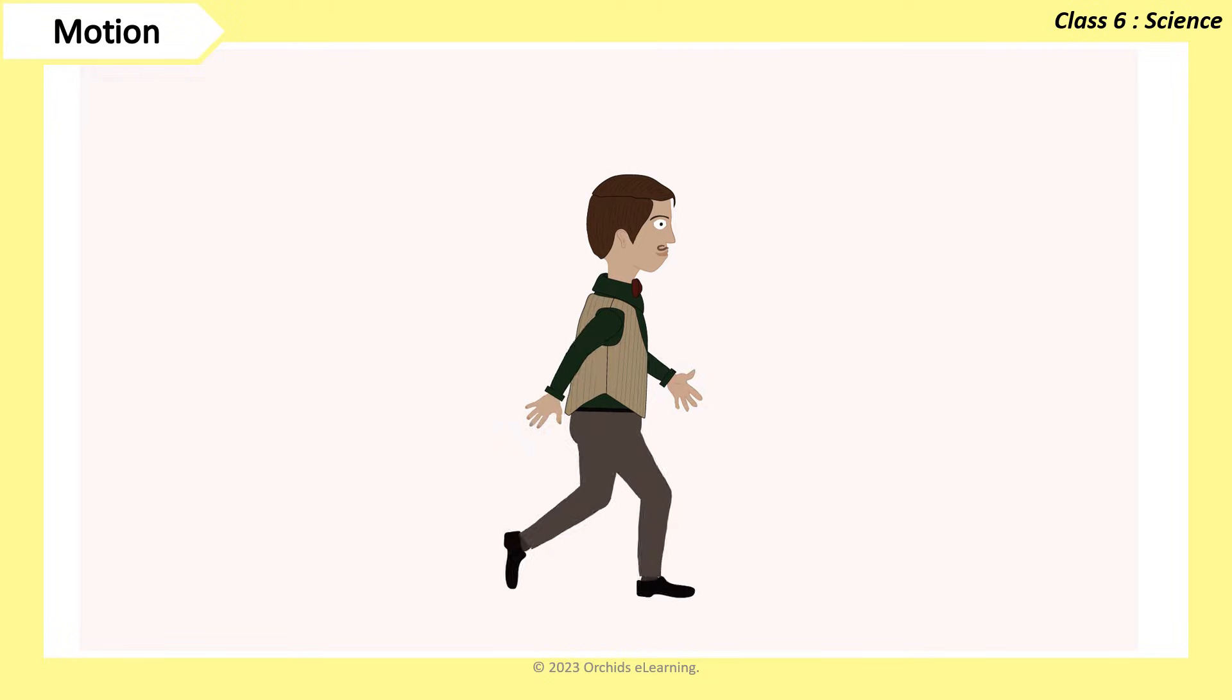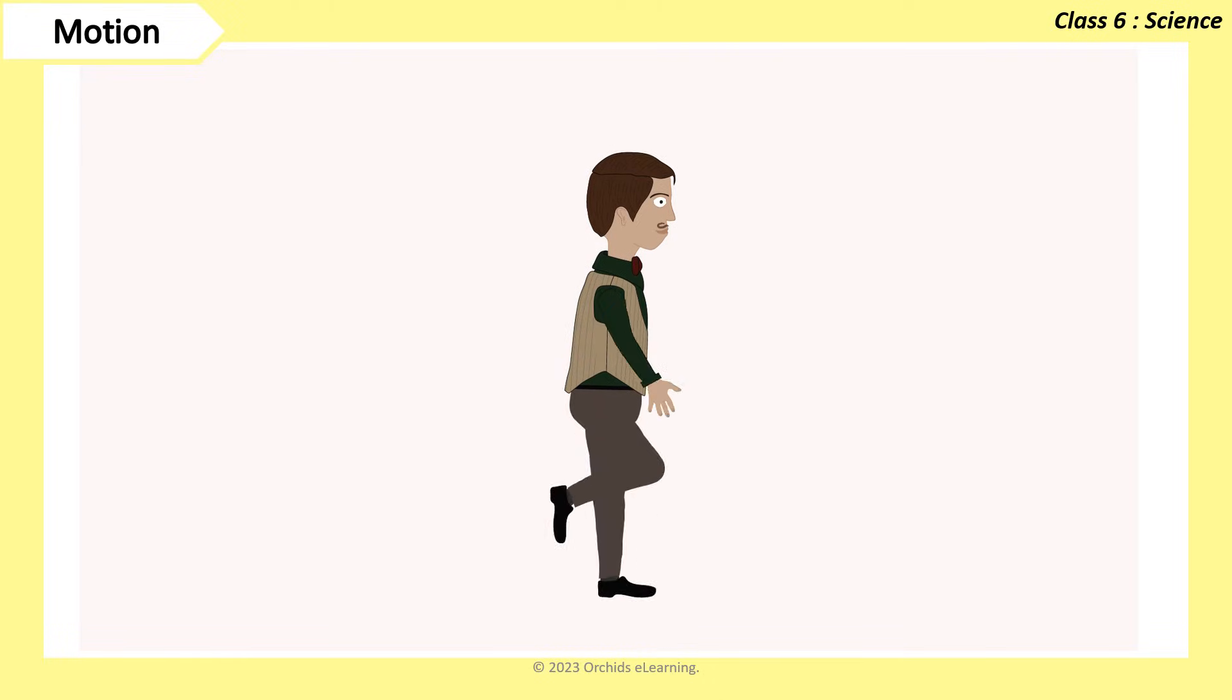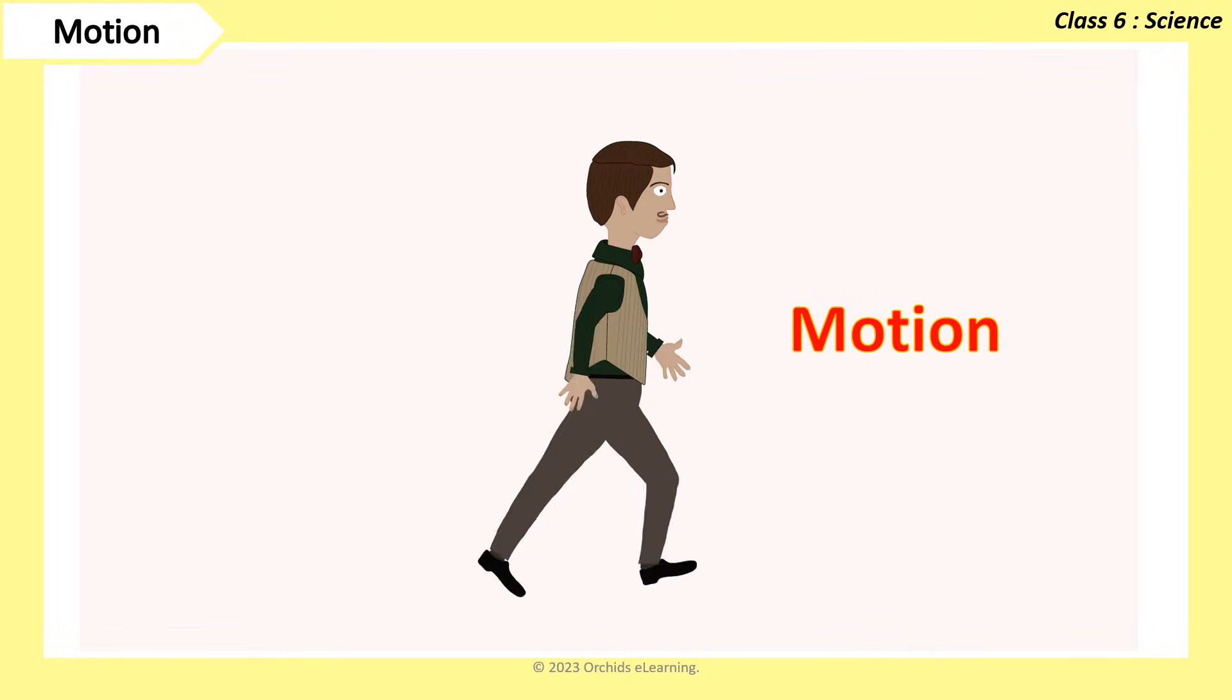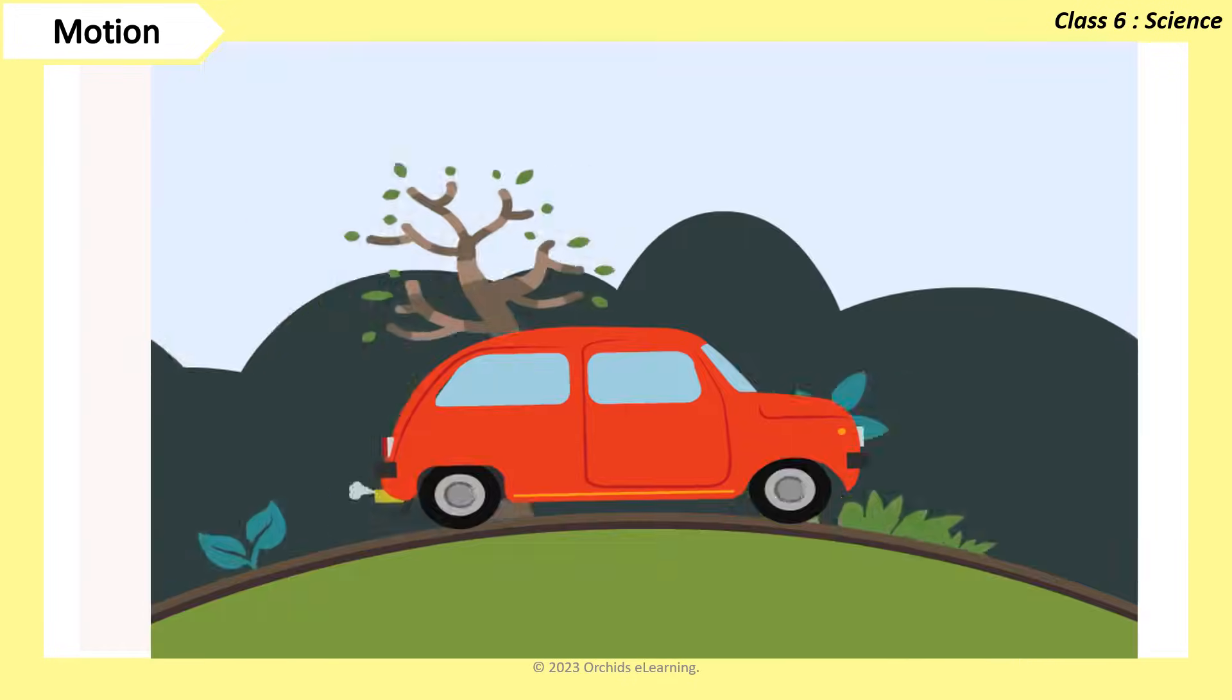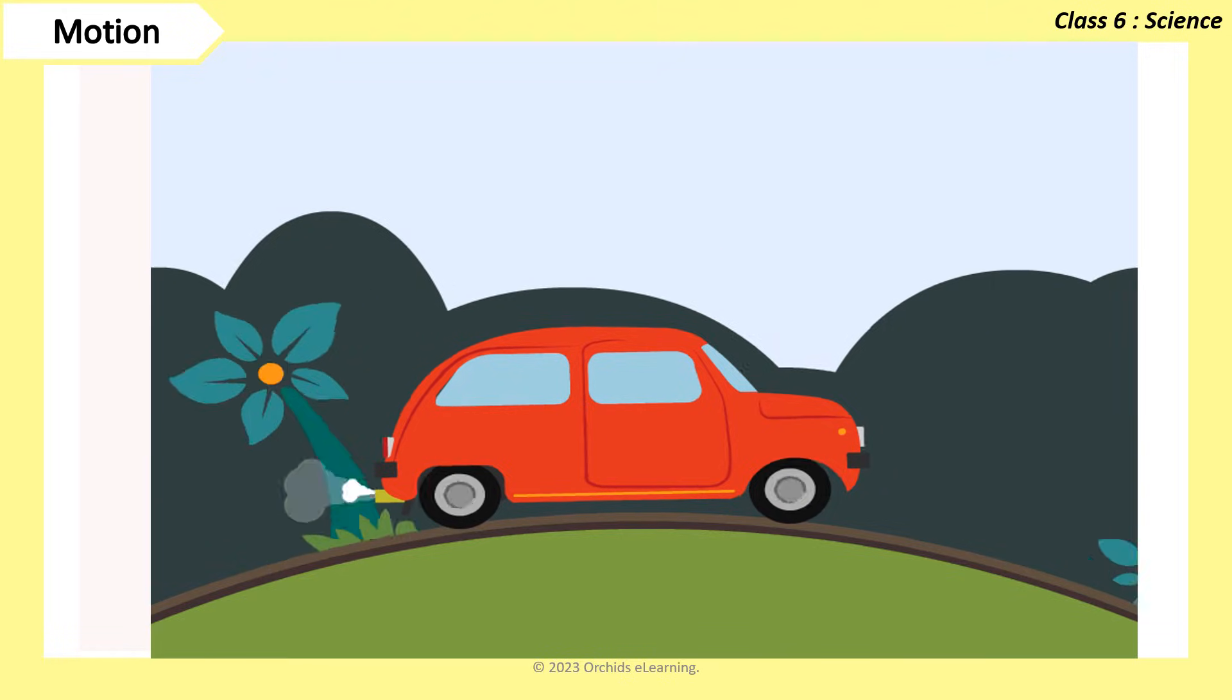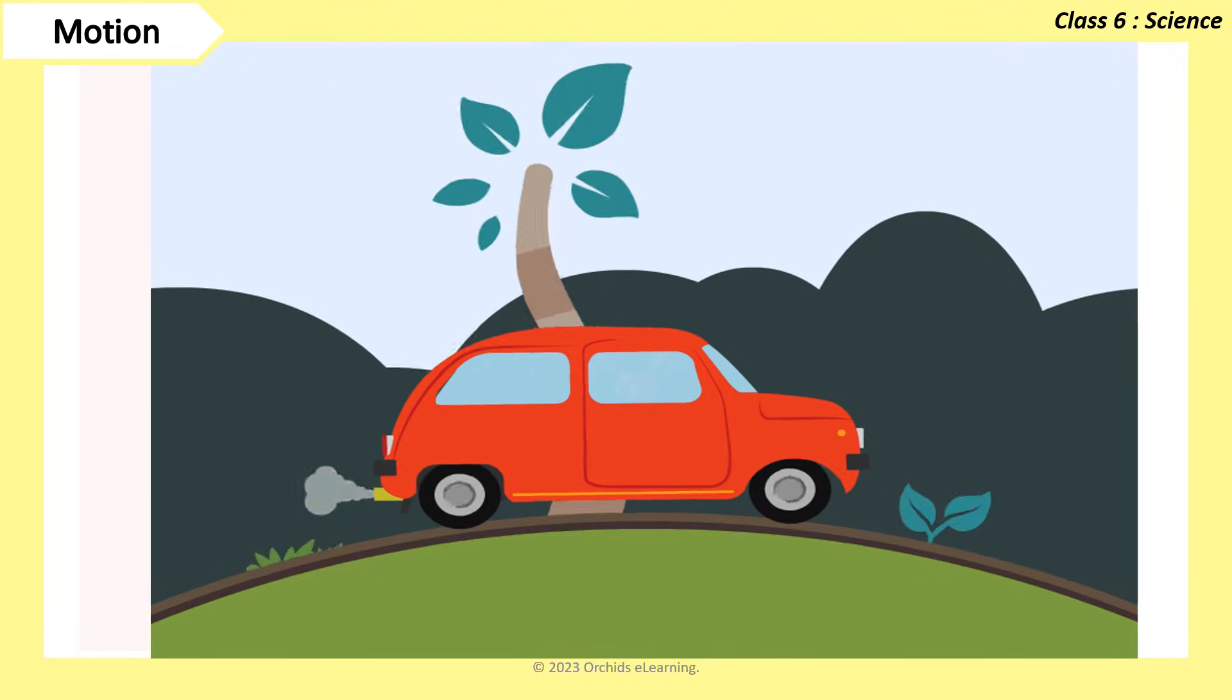Now, let us learn about motion and its types. An object that moved is said to be in motion. The object always moves with respect to another object, and time. For example, when we say a vehicle is moving, it is always with respect to the trees and poles on the road that are not moving.